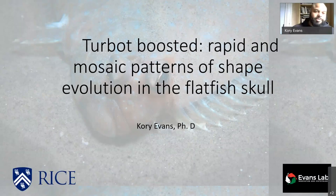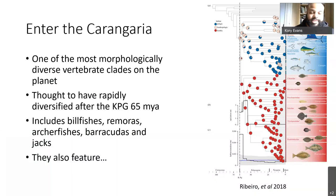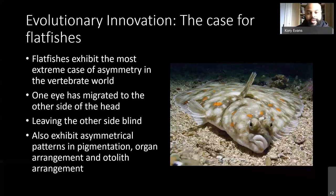The next group of fishes might be even odder than parrotfishes — the Carangarians. The name can be a mouthful, but this clade includes very charismatic fish: barracuda, jacks, swordfish, mahi-mahi, and some really cool-looking fish. They also include flatfish — one of the weirdest vertebrates on the planet, and the most asymmetrical vertebrate on the planet. In a flatfish, both eyes are actually on the same side of the head, creating a very strikingly bizarre morphology.